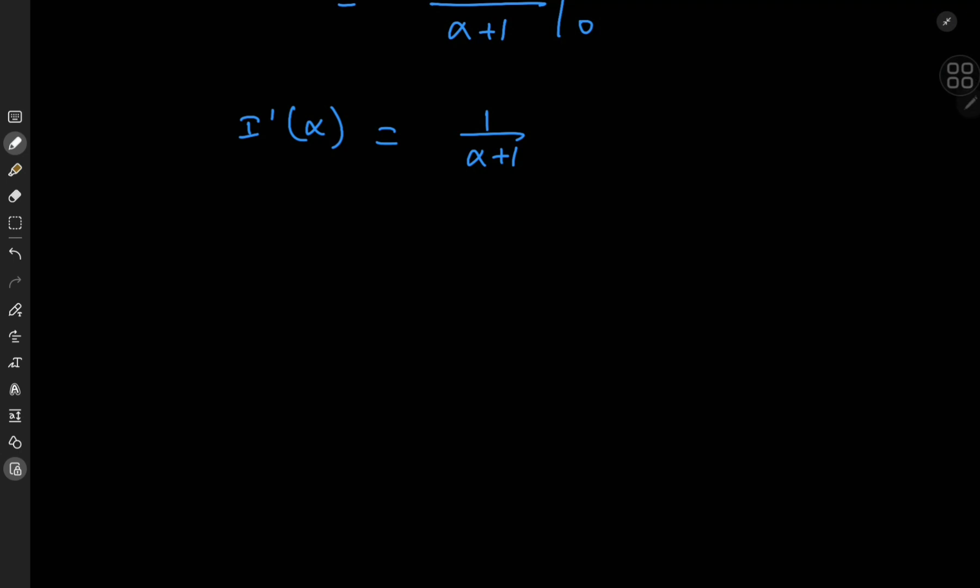Now that we have the derivative of i completely in terms of the parameter, we can recover the integral function by integrating with respect to the parameter. So on the left hand side, I have i of alpha, and on the right side I have the logarithm of alpha plus 1 plus some constant of integration c that I now have to determine.